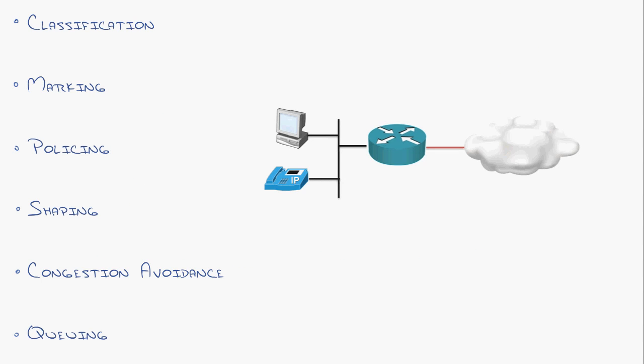If you open somebody's toolbox you'll often find multiple tools that have the same goal but accomplish it differently. A jigsaw, table saw, and hacksaw all do the goal of cutting something but might approach it a little differently. In the same way, all these are quality of service categories — they all have the same goal, they may just approach it differently.